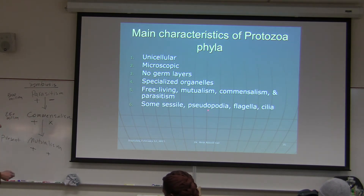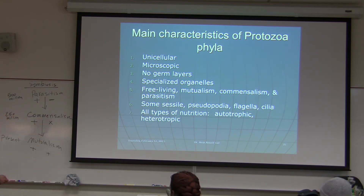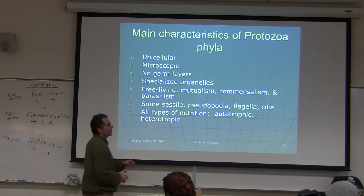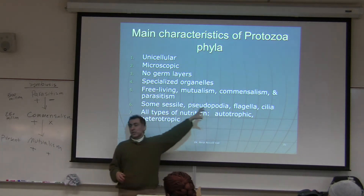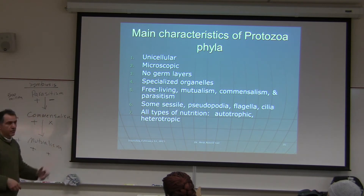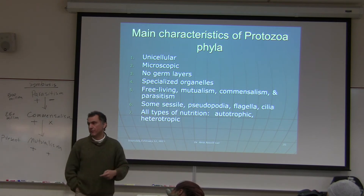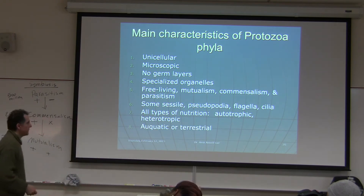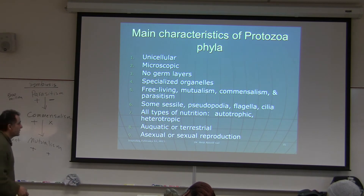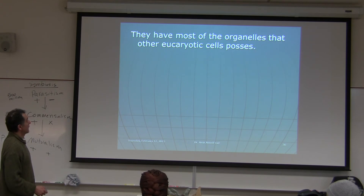Protista have various modes of locomotion: cilia, flagella, pseudopods, and so on. Nutrition types include autotrophic (making food by photosynthesis) and heterotrophic (engulfing food, like humans). They can be aquatic or terrestrial, and they reproduce both asexually and sexually.